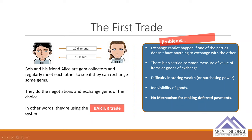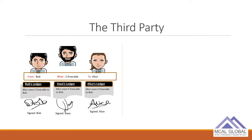To overcome these problems, people realized they needed an intermediary — a trusted third party. In this arrangement, there's Bob, Alice, and a third party called Dave. Dave maintains a ledger, and any trade between Bob and Alice has to be written in it. Both Bob and Alice trust Dave, so whatever is in Dave's ledger they all agree to. This introduced the concept of deferred payments — the trusted party could vouch that a transaction took place.